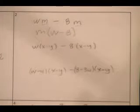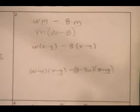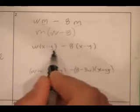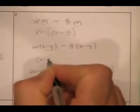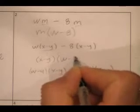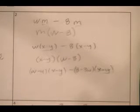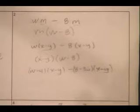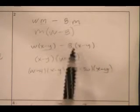What if that m was actually x minus y? Wouldn't you do the exact same thing? And the answer is yeah. I'm going to factor out the x minus y, and I still get w minus 8.